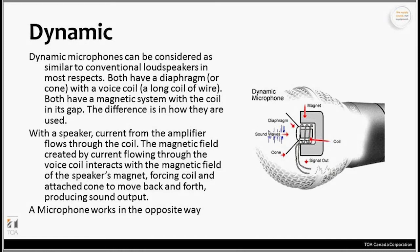Both have a diaphragm or cone, a voice coil — a long coil of wire wrapped around — and magnetic systems with the coil in its gap. The difference is how they are used. With a speaker, current from the amplifier flows through the coil; the magnetic field interacts with the magnet, forcing the coil and attached cone to move back and forth, creating sound. A microphone works in exactly the opposite way: sound hits the diaphragm and moves through the voice coil, and that signal comes out as a very low voltage electrical signal out to the input of your mixer.